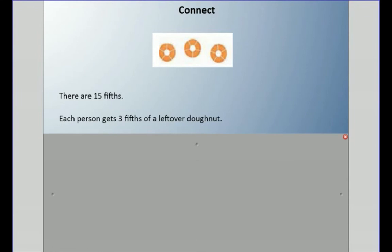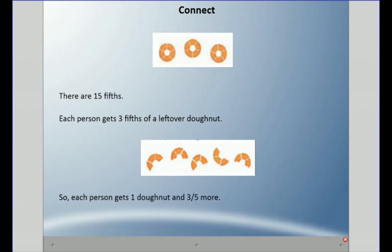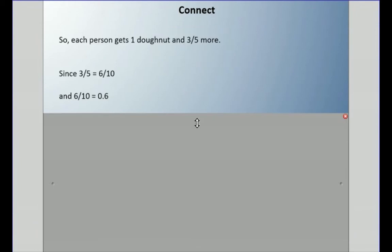Now we can divide these up a little bit further. Each person's going to get three-fifths of a leftover donut. Here's kind of the image there. So in the end, each person gets one whole donut and three-fifths of a donut more.